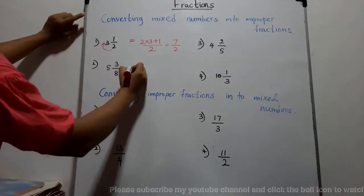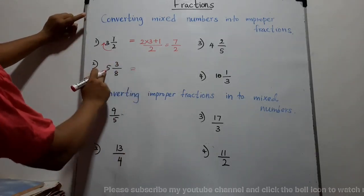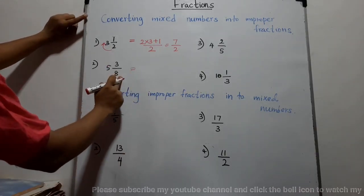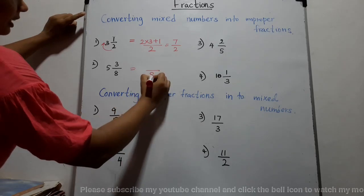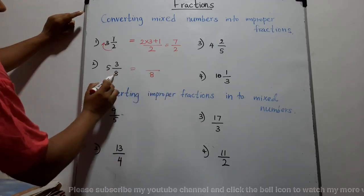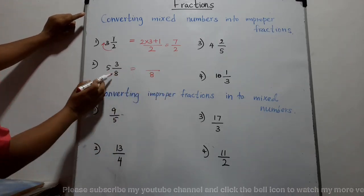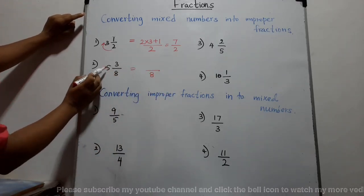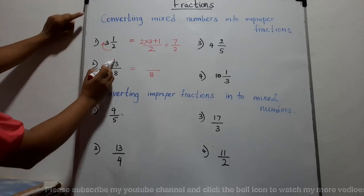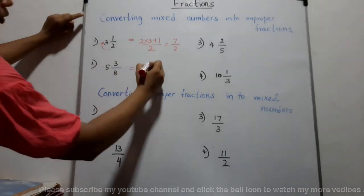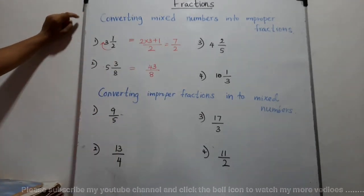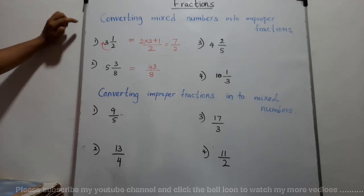Next: five and three-eighths. Denominator is eight. We multiply the denominator by the whole number: eight into five is forty. Forty add three is forty-three. The answer is forty-three over eight.